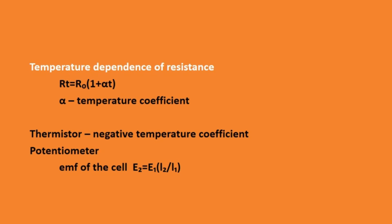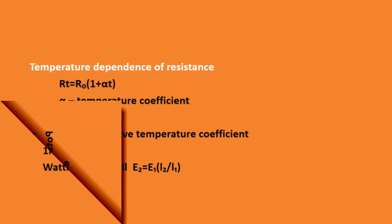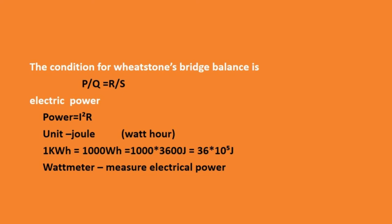Next is potentiometer. A potentiometer is used to compare the EMF of two cells. The EMF of a cell can be calculated by E2 equal to E1·L2 by L1. If one EMF value is known, we can find the other. Next is the condition for Wheatstone bridge balance. The Wheatstone bridge is an application of Kirchhoff's law, and the condition for bridge balance is P by Q equal to R by S.